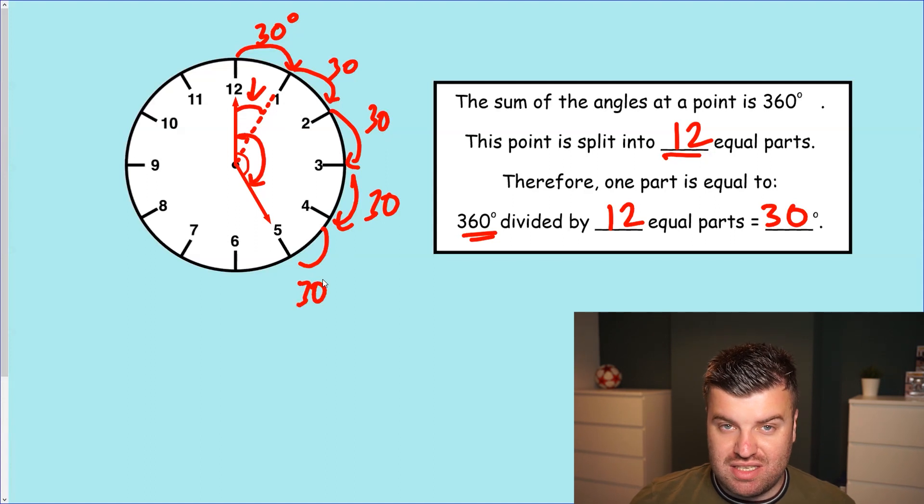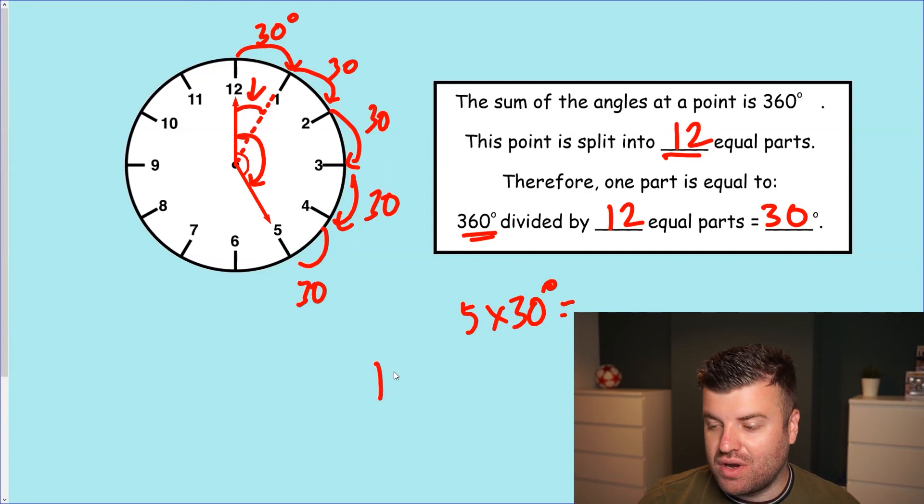Each jump is 30 degrees. So now we can actually accurately calculate the answer, which is 5 lots of 30 degrees. The answer to this question is 150 degrees. Hopefully you can see how we can calculate it. We do not guess.